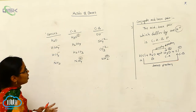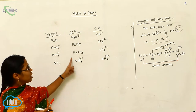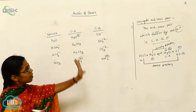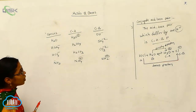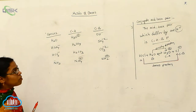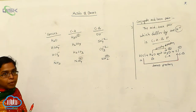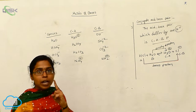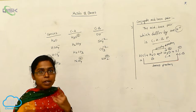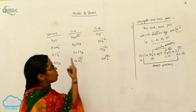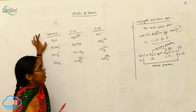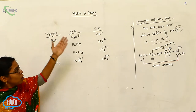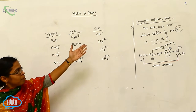These pairs differ by only one H⁺ ion, so these acid-base pairs are called conjugate acid-base pairs. That completes the second acid-base theory — the Brønsted acid-base theory, which always explains conjugate acid-base pairs.